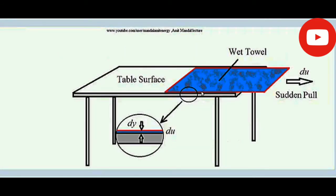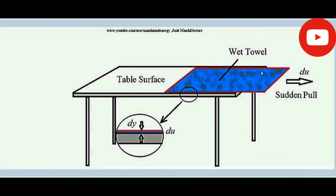To get a feel for Newton's law of viscosity, consider this experiment: there is a table and over it a wet towel is placed. The towel is sufficiently wet so it will try to stick to the table surface. Some portion of the towel hangs out from the surface. Hold the two free corners and give a sudden pull. You will find that a resistance is offered by the towel for its sliding — it tries to restrict that motion.